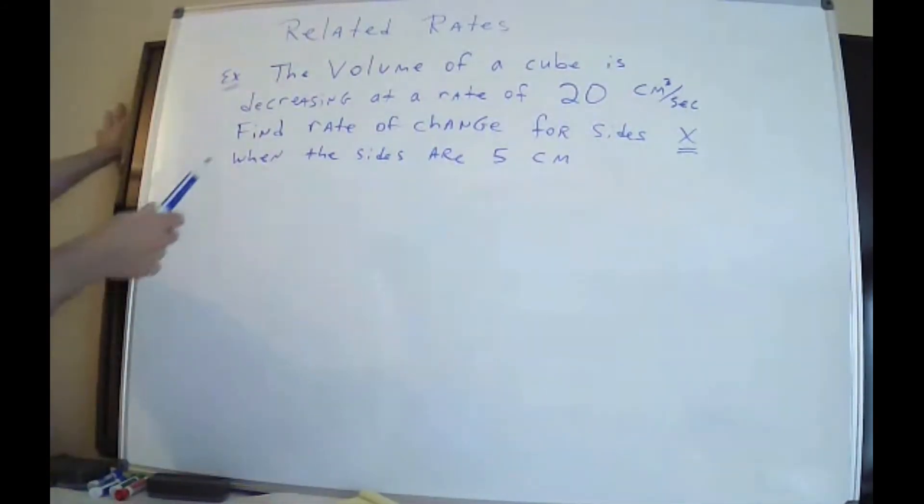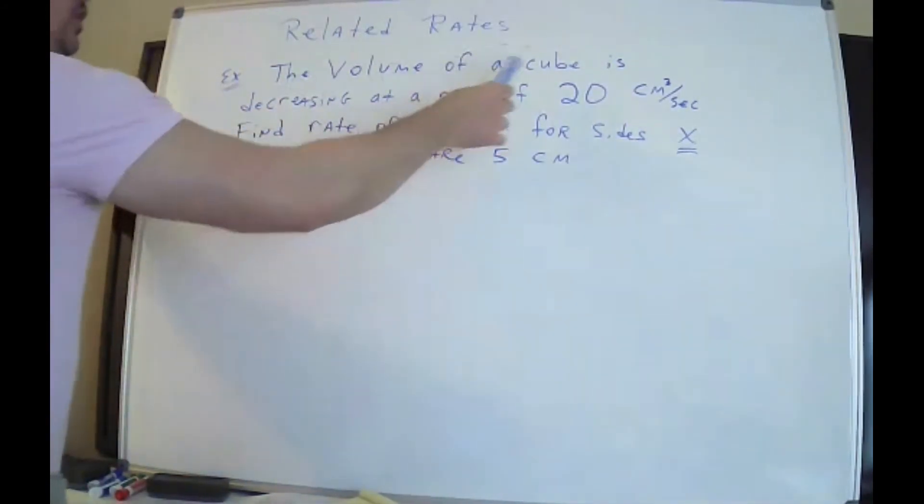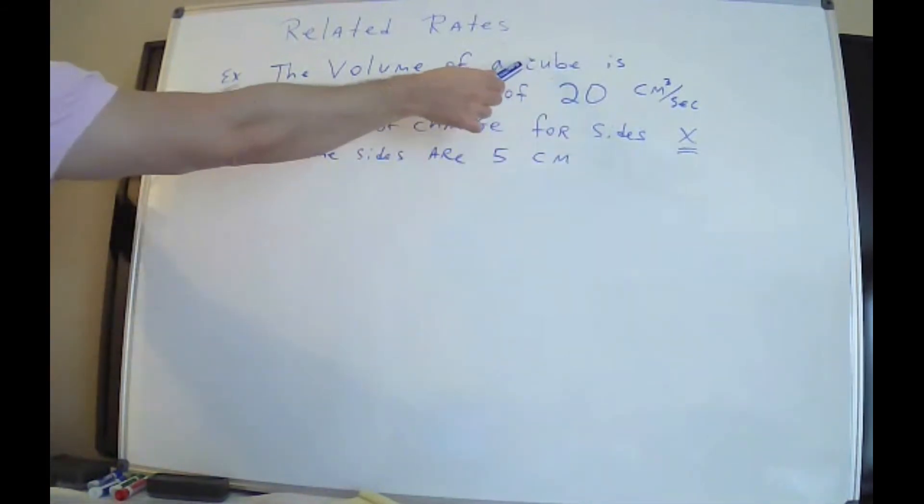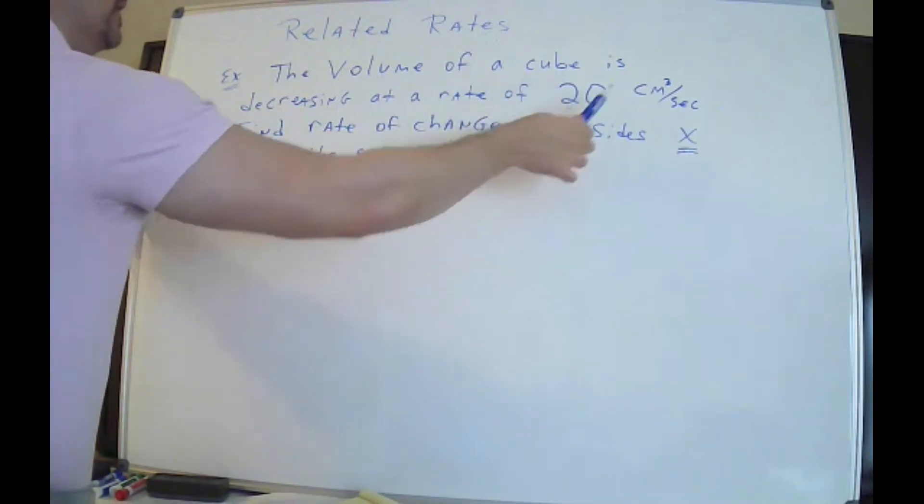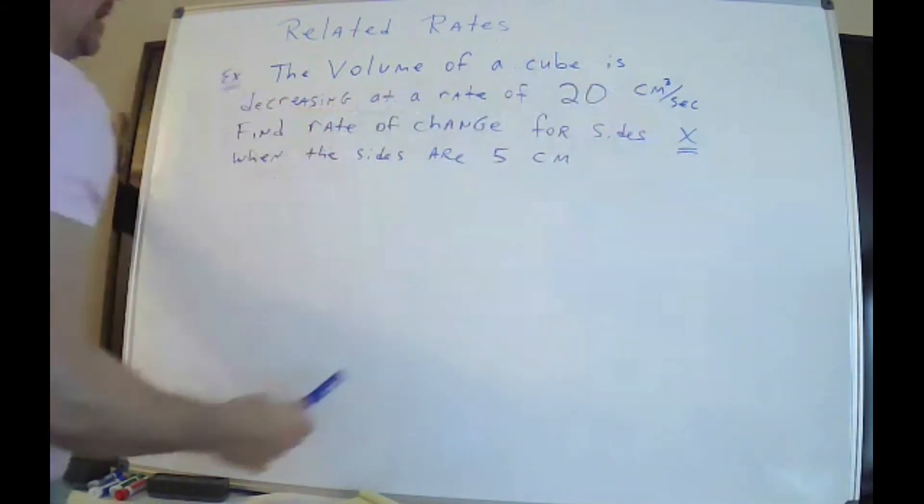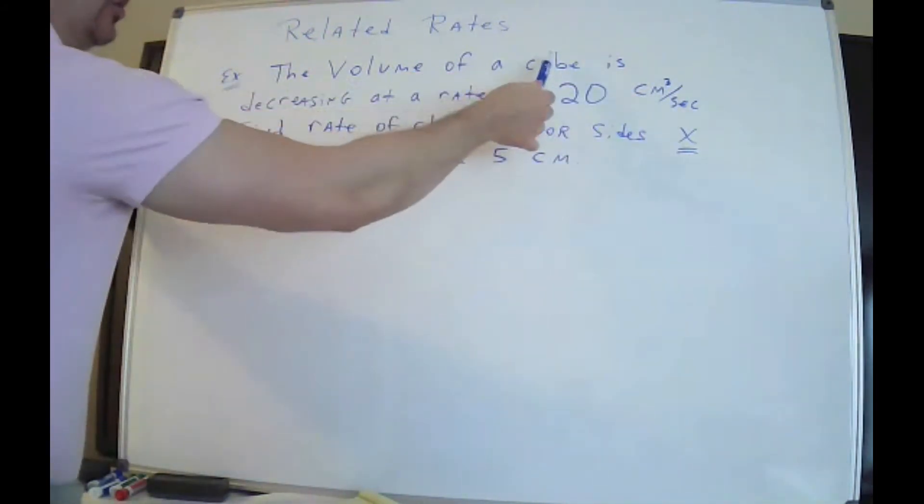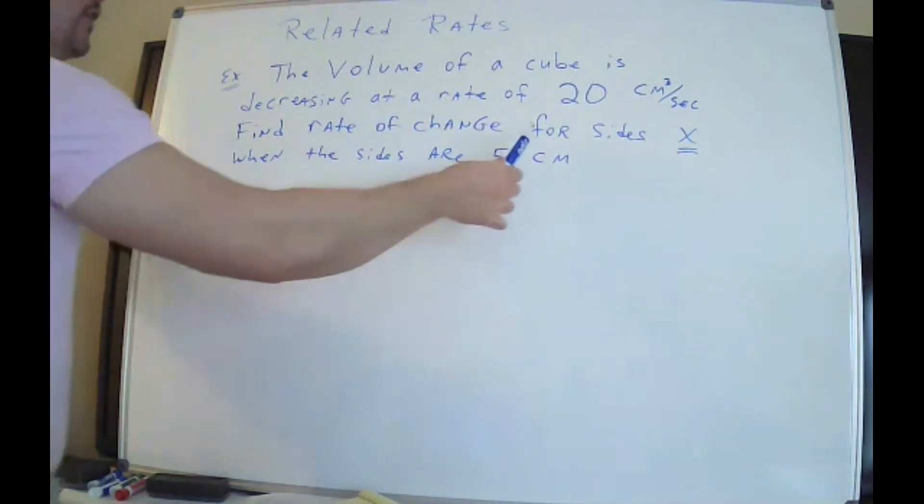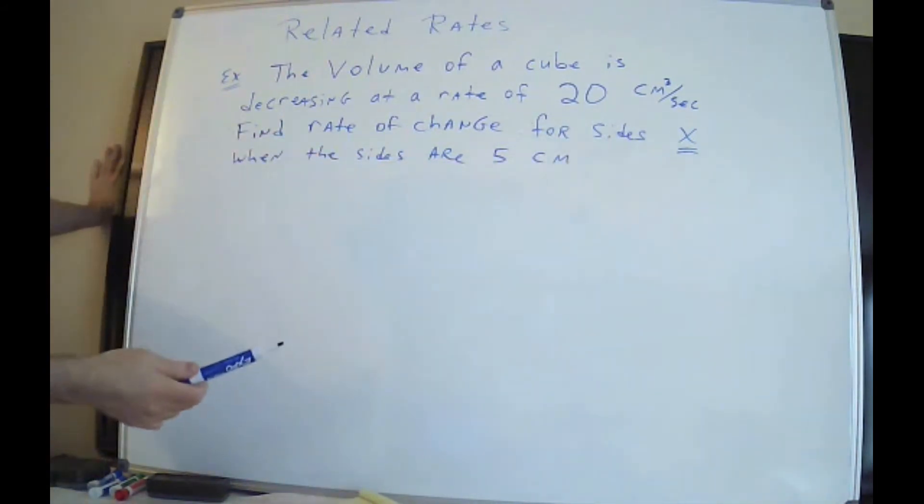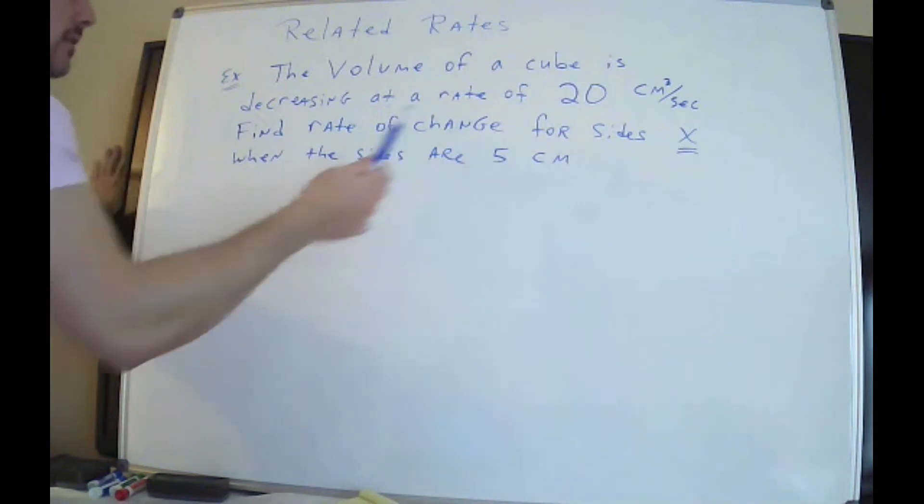Second example. I have the volume of a cube is decreasing at a rate of 20 centimeters cubed per second. Why cubed? Because it's a cube. Because it's got length, width, and height. Find the rate of change for the size x. All the sides here. It's a cube. You have three sides. A length, a width, and a height. They're all x. I want to find the rate of change for the sides at the moment that they're 5 centimeters.